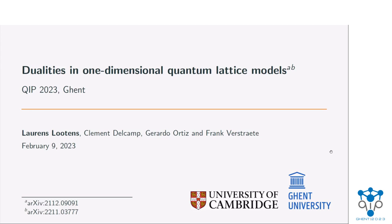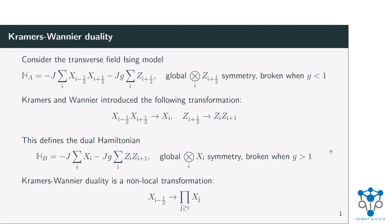So indeed, I will talk a bit about dualities. We already heard some from Nat as to why these can be interesting in a quantum information context. But dualities really have been part of the canon of quantum many-body physics for a little over 80 years now. So to start, what do we mean with a duality? The easiest thing is to start with just the simplest example of a duality, which is Kramers-Wannier, as Nat already talked about as well.